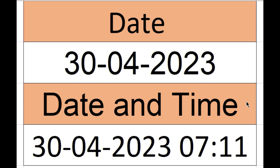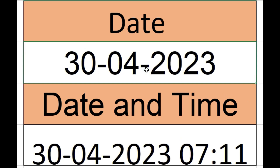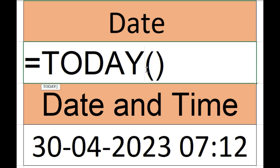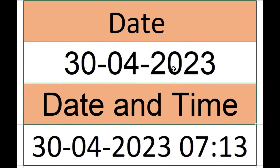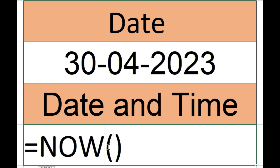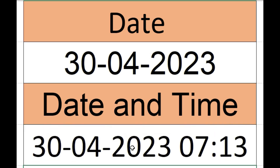To get today's date, set a cell equal to today() and press Enter — you will get today's date. If you want to get the date as well as the time, set it equal to now() and press Enter — you will get today's date as well as the time. Thank you for watching.